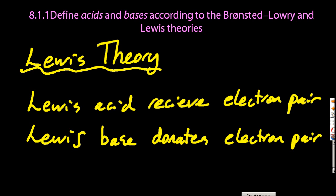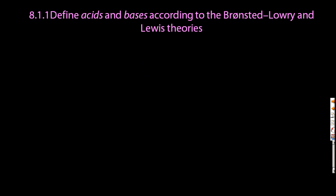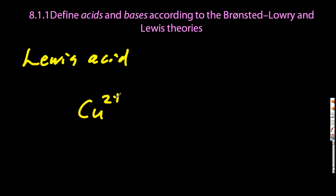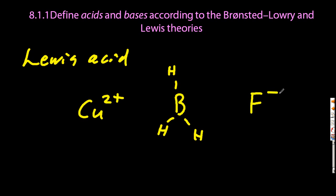Let's look at some possible Lewis acids. Copper 2⁺ would attract an electron pair — that's probably a Lewis acid. Boron trihydride has six electrons around boron, probably room for two more to make eight, so that would be an acid. But fluoride is not going to attract an electron pair — it's negative.